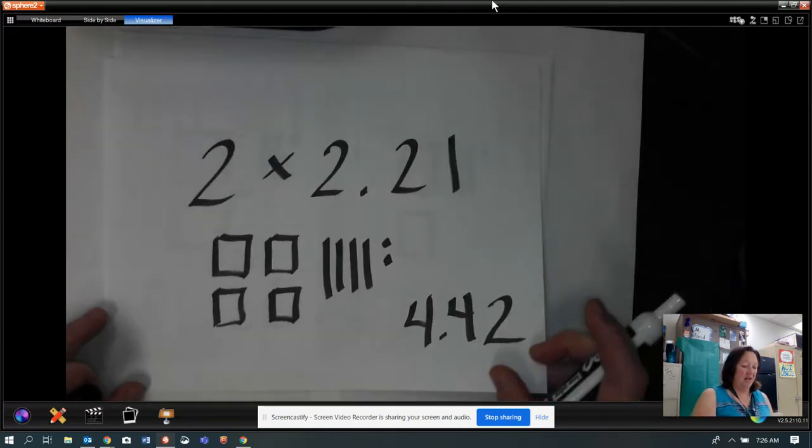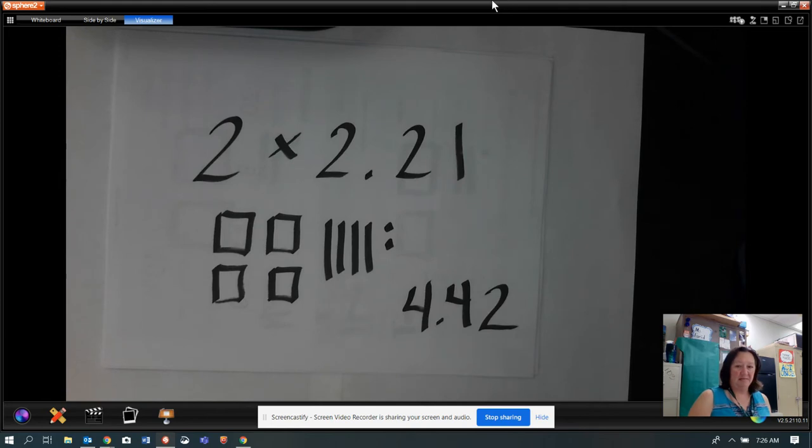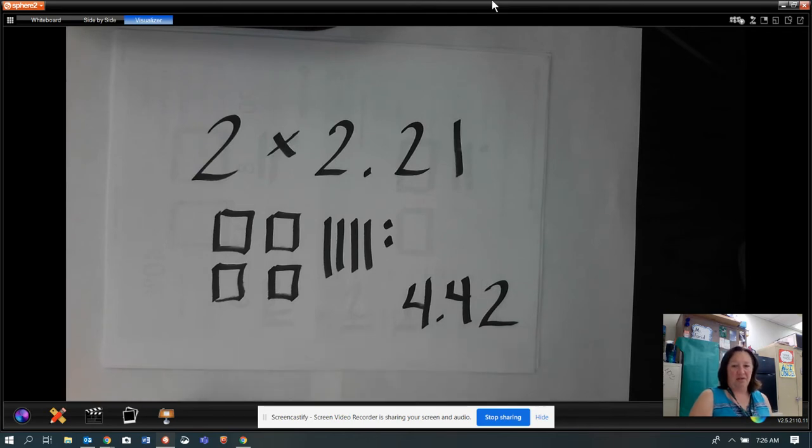When I put those together, it's going to look like this. Then I combine the pieces that are the same. So I have all my whole together, all my tenths together, and all my hundredths together. And then I can just count them. So we have four in the ones place, four in the tenths place, and two in the hundredths place. That's four and 42 hundredths.